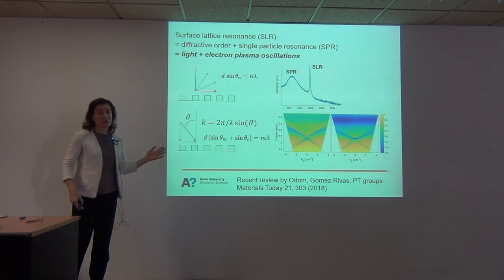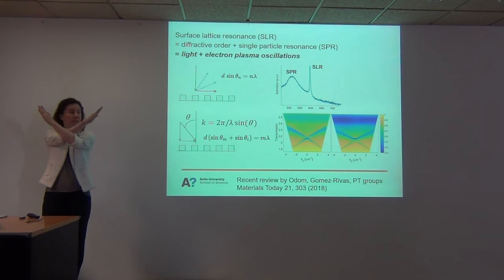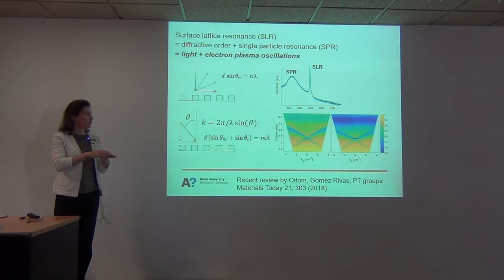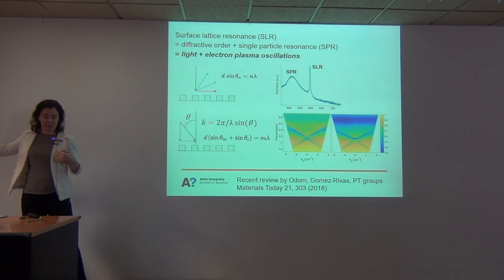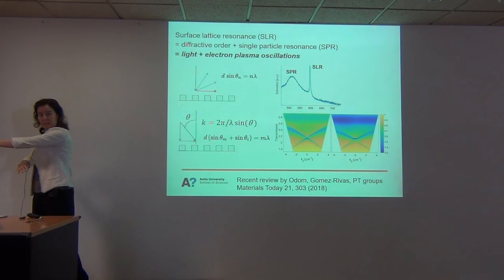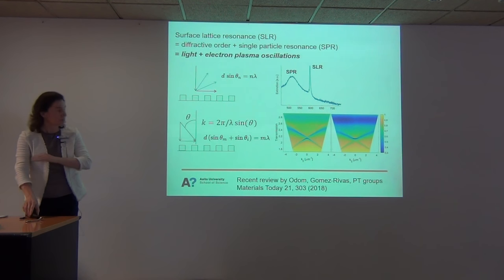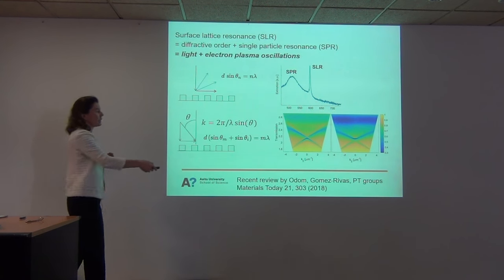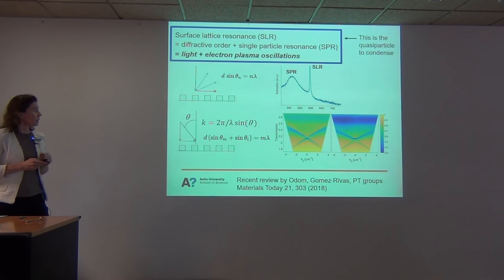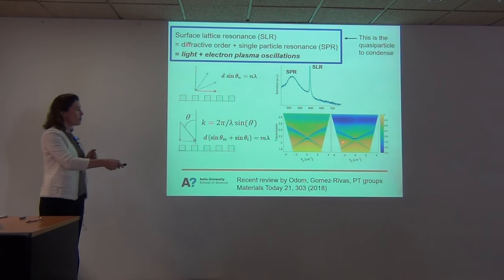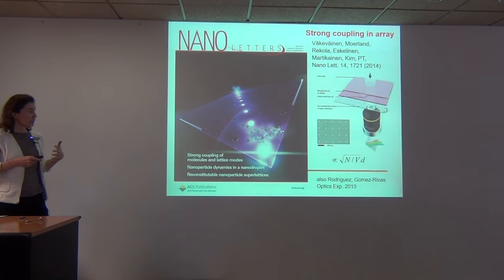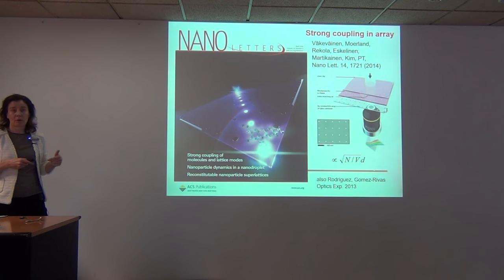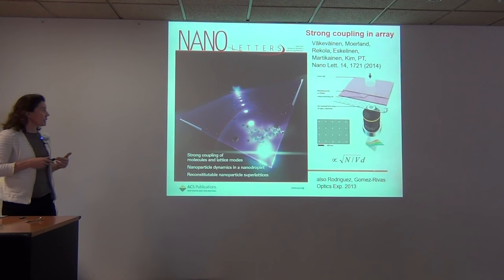That band gap comes from the properties of the plasmonic resonance. If you would have only the diffracted orders they would cross, but the resonance helps to scatter a wave coming in one direction on the plane very efficiently to a wave going the other direction, and this creates a sizable gap. So as a reminder, this is what we are trying to condense — modes following this dispersion.